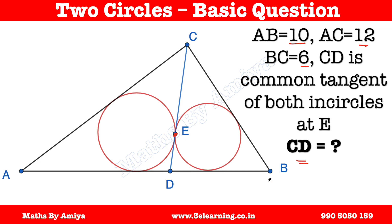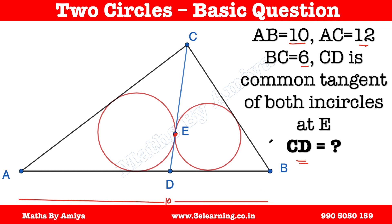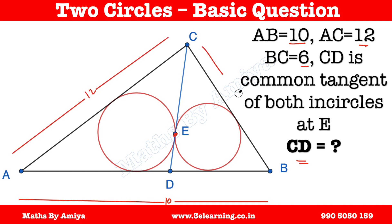First, let's draw the figure. We have AB = 10, which is also given in the figure. AC = 12, you can note that. And CB = 6. So we have all the data.